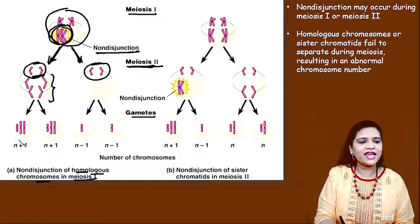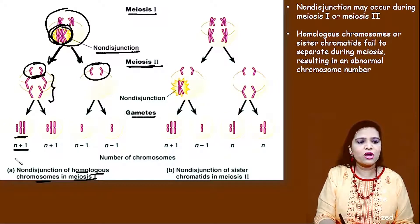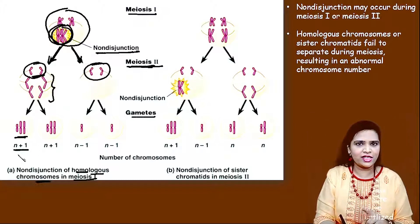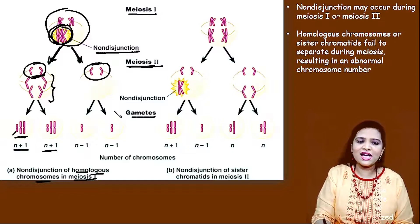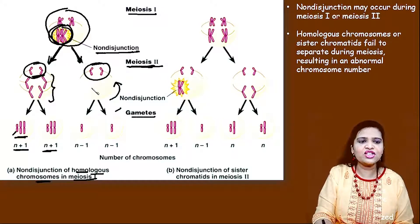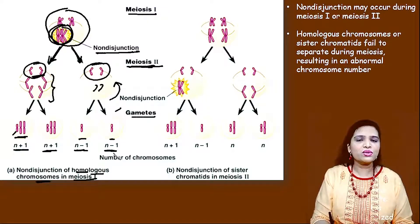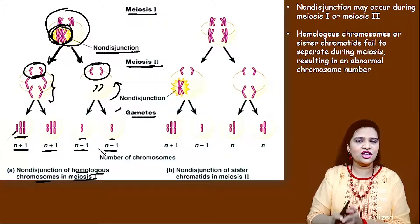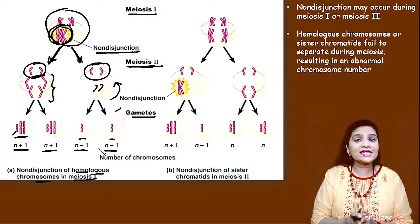So when the gamete forms from this cell, the gamete is not having normal diploidy — it has one extra copy, N+1. Here also N+1. This gamete derived from the cell that lost its chromosome carries only one copy, called N−1. This non-disjunction occurs during the separation of chromosomes during cell division.